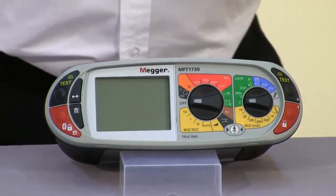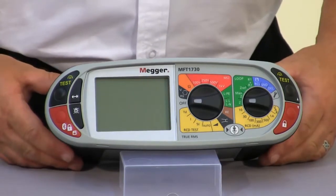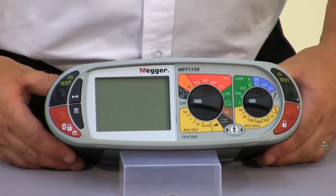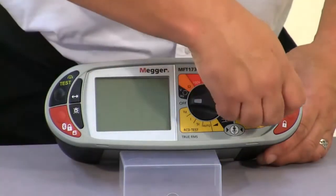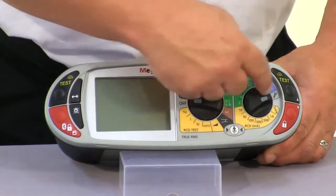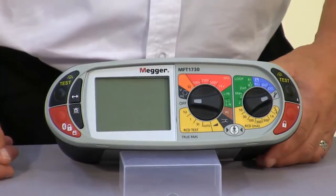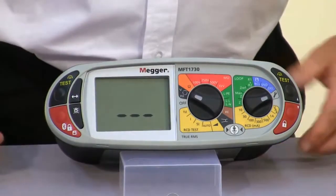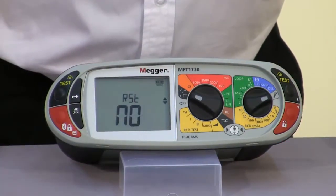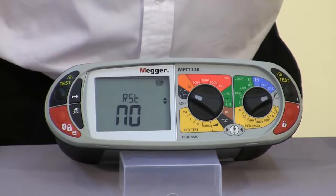What we're going to do today is run through the setup parameters that are available on the MFT1700 series. Over on the right hand range knob we can select our spanner or setup position, and the left hand range can be turned to any setting. The unit will initially come up with a version number, and then it takes us into our setup menu.